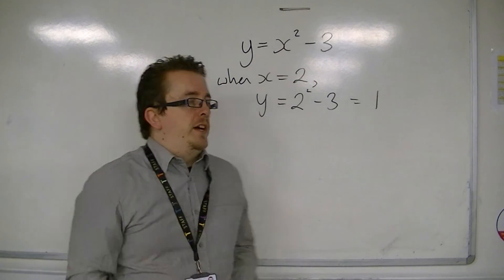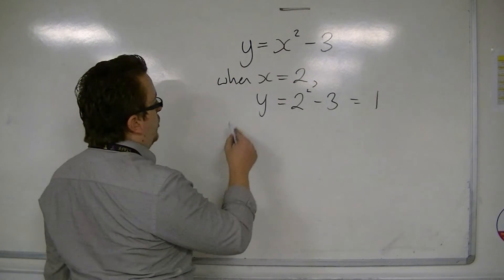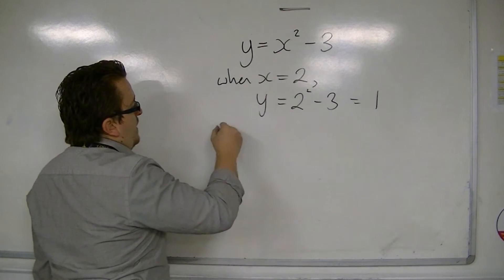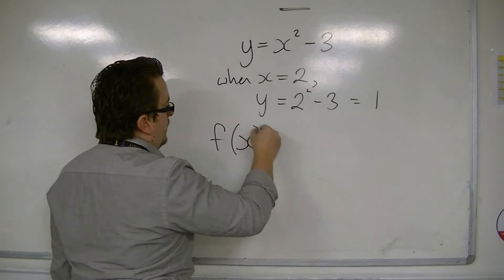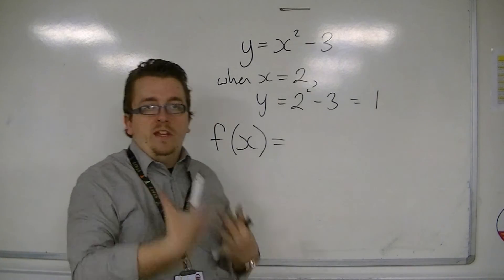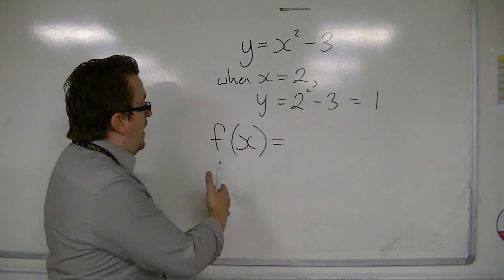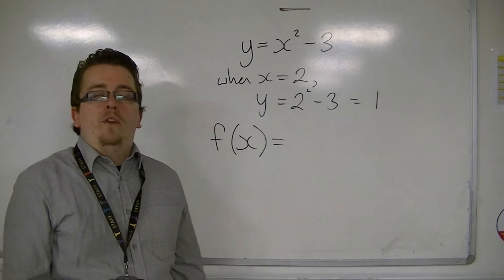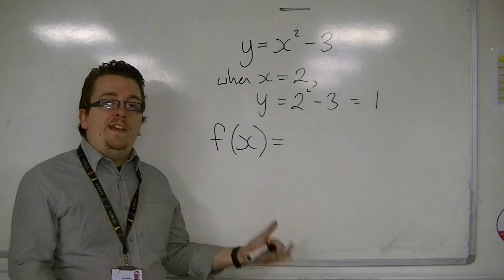With function notation, what we say is that we're going to call y equals x squared minus 3, f of x. The f is standing for function here, that's why we use f inherently, but we could use any letter we really want. We could have g of x, h of x, whatever.